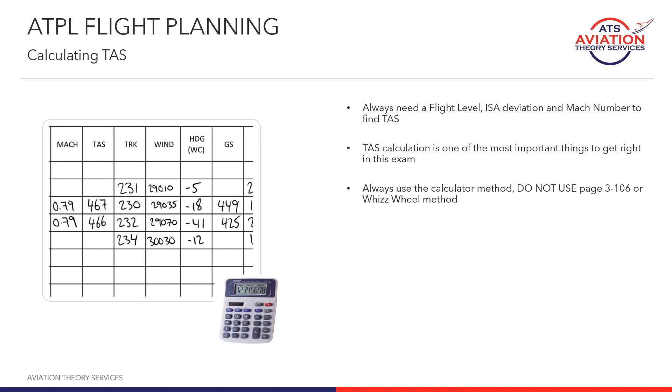The actual calculation for TAS is a little bit scientific and we are not going to go into why the calculation works. Essentially we will be calculating a temperature for a given altitude, accounting for ISA deviation, converting it to a different temperature scale, and then working out the speed of sound. It all sounds a little bit confusing but it is actually pretty easy and after a few practice questions you will be all over it.